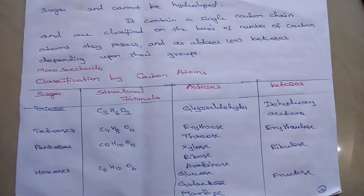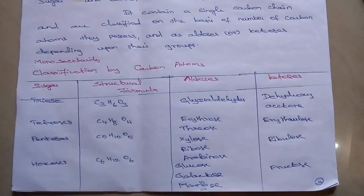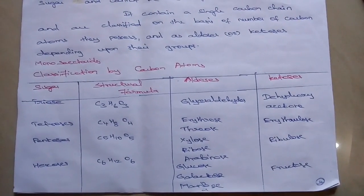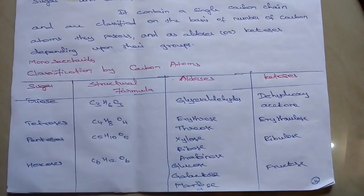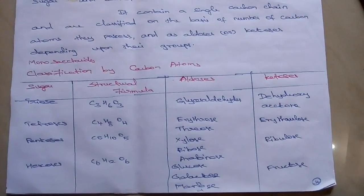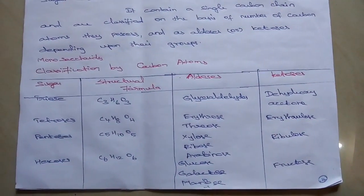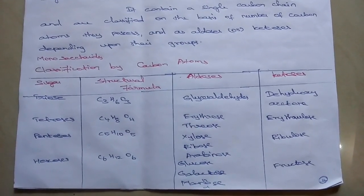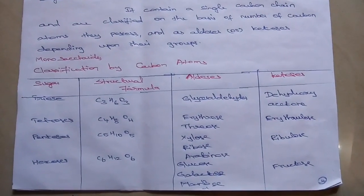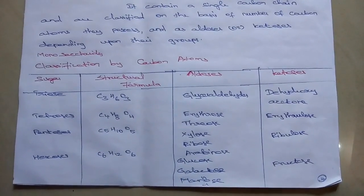Aldose for triose is an example: glyceraldehyde, and ketose for triose is dihydroxyacetone. Tetrose contains carbon-4, hydrogen-8 and oxygen-4. Example for aldose tetrose: erythrose and threose. Ketose for tetrose: erythrulose. Next is Pentose. Pentose contains carbon-5, hydrogen-10 and oxygen-5. Aldoses examples are xylose, ribose and arabinose. Ketose example is ribulose.